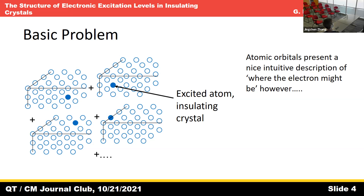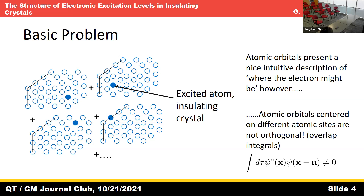You can imagine a crystal where all the atoms are in their ground state, and then the electron in one of the atoms is in its first excited state. The problem with these kinds of states is that atomic orbitals centered on different sites are not orthogonal — there's going to be some finite overlap.